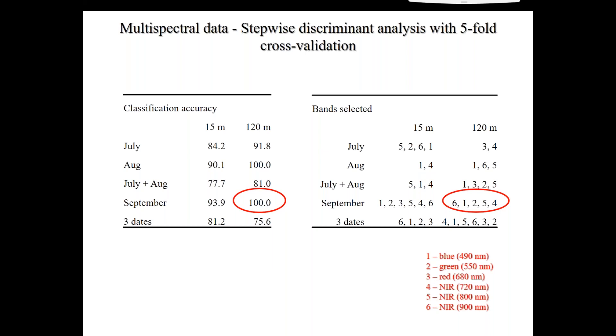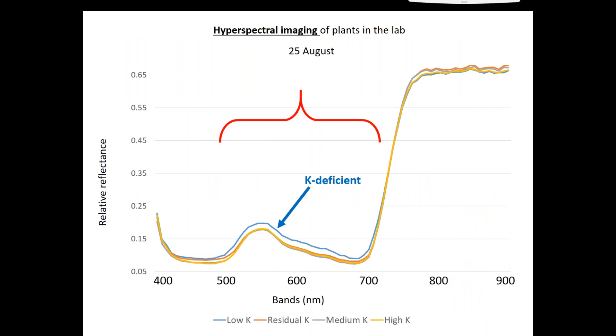But it's good that we could get very high classification accuracy. And you can see when the three dates are combined, the accuracy drops even more. So at 120 meters, I would only get 75% accuracy if I was using that particular model.